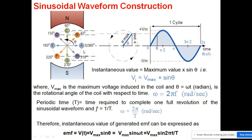When one revolution of the coil is divided into 360 divisions, it is called the mechanical angle. When one cycle is divided into 360 divisions, it is called the electrical angle. In electrical engineering we use the term electrical angle, and this should be very clear in your mind.